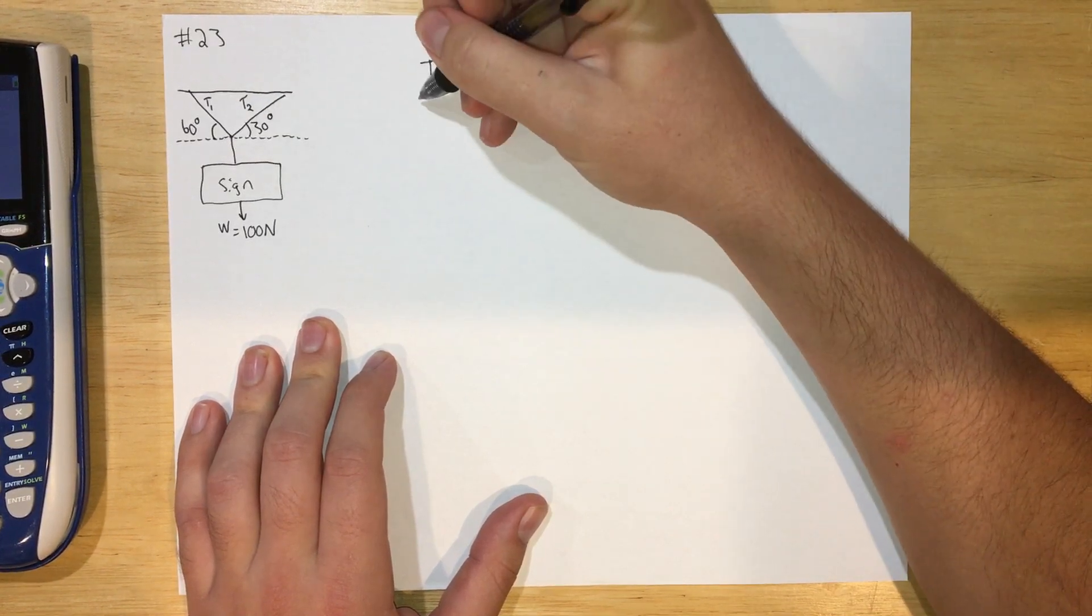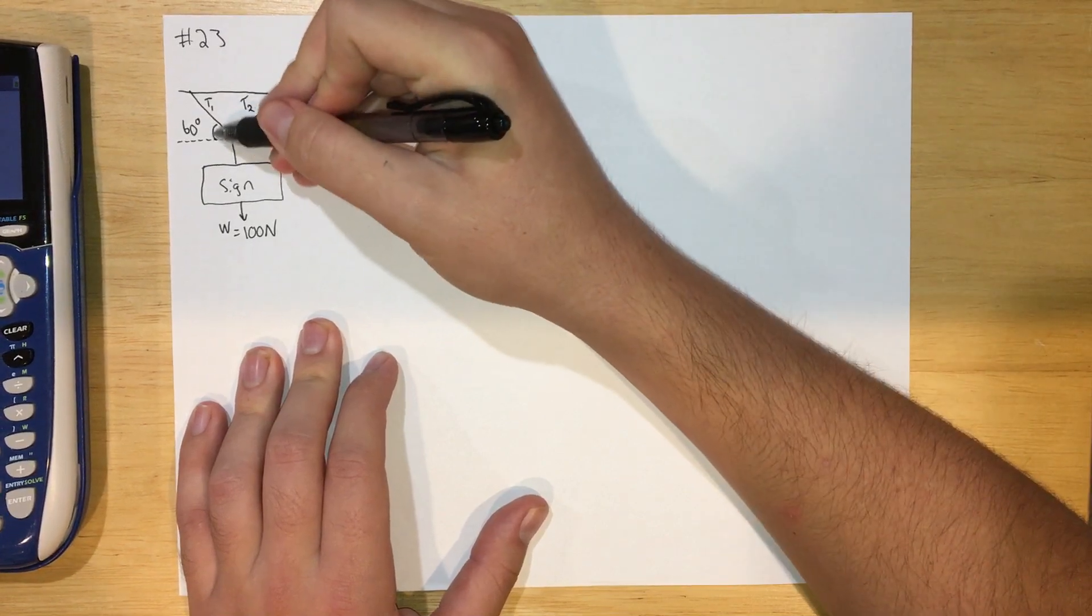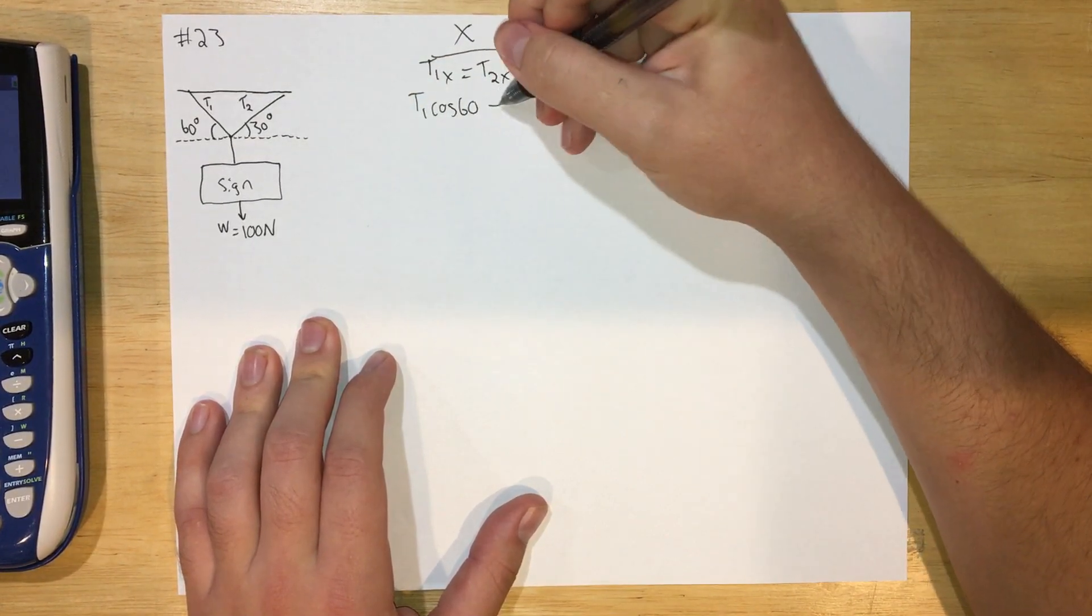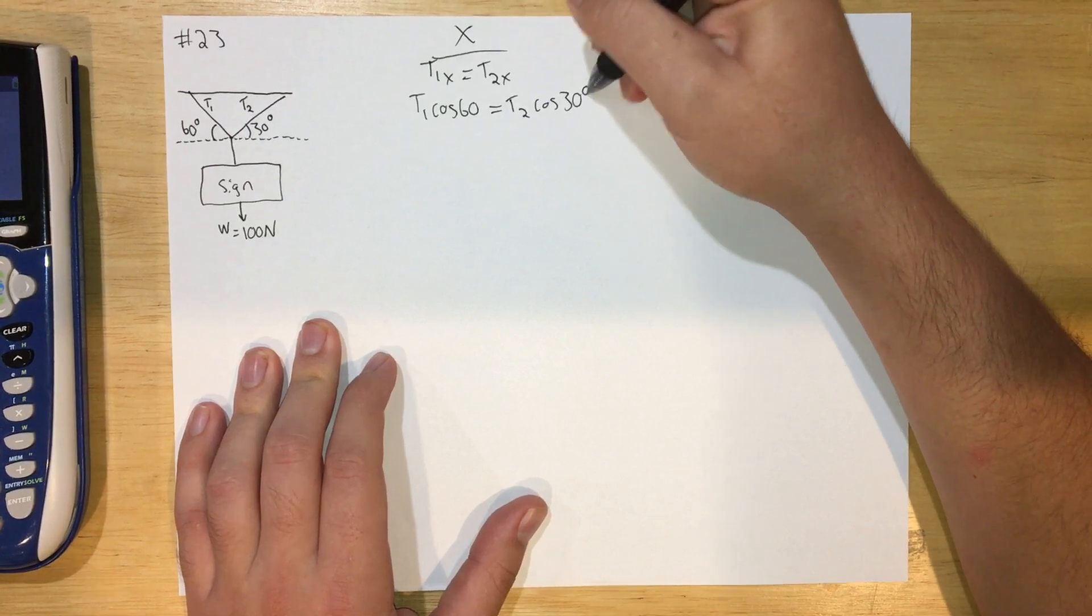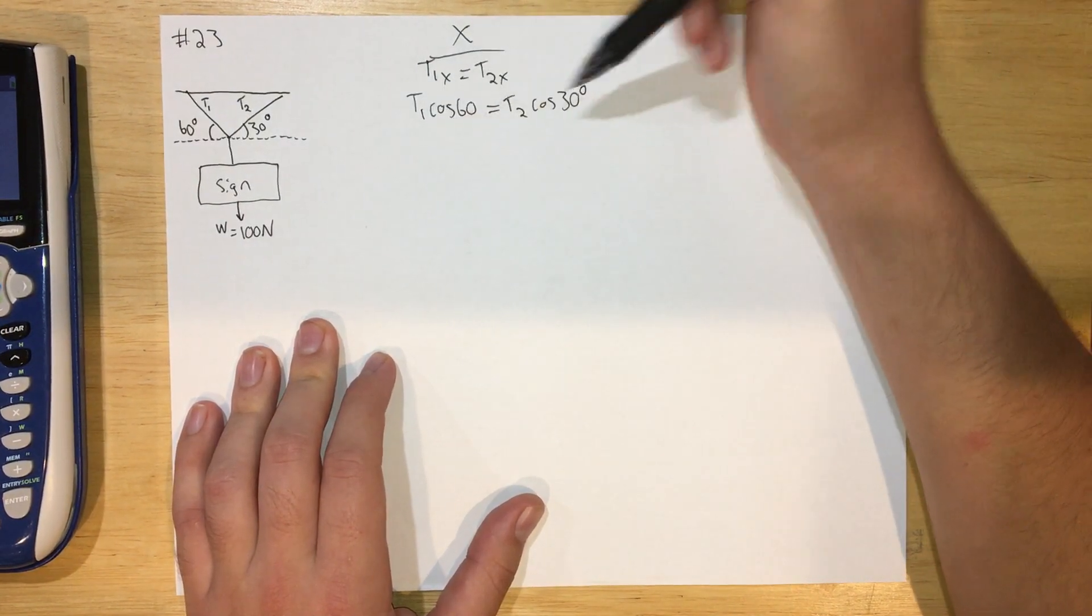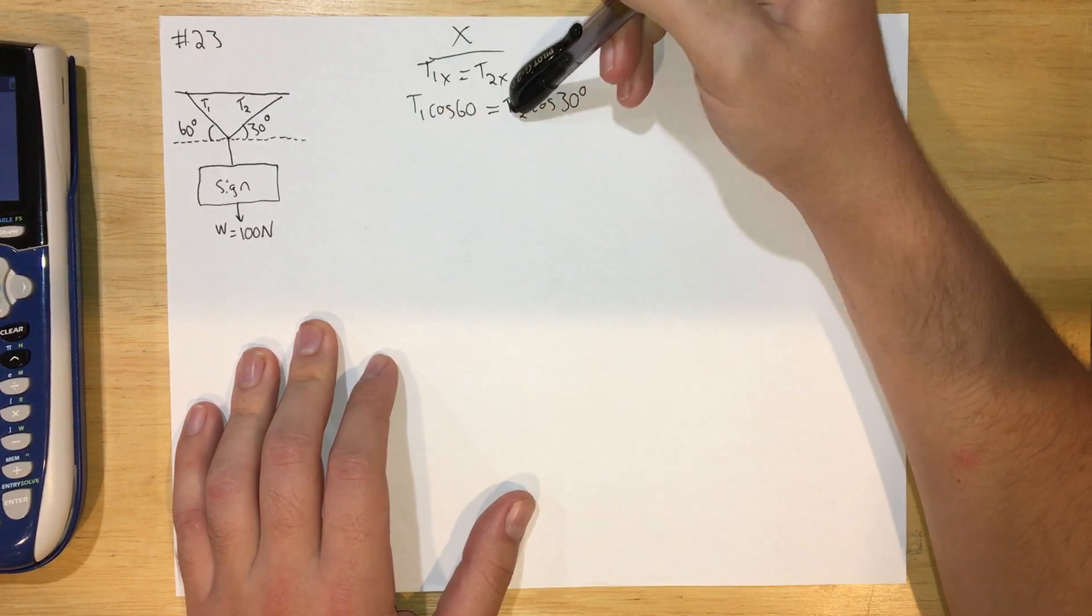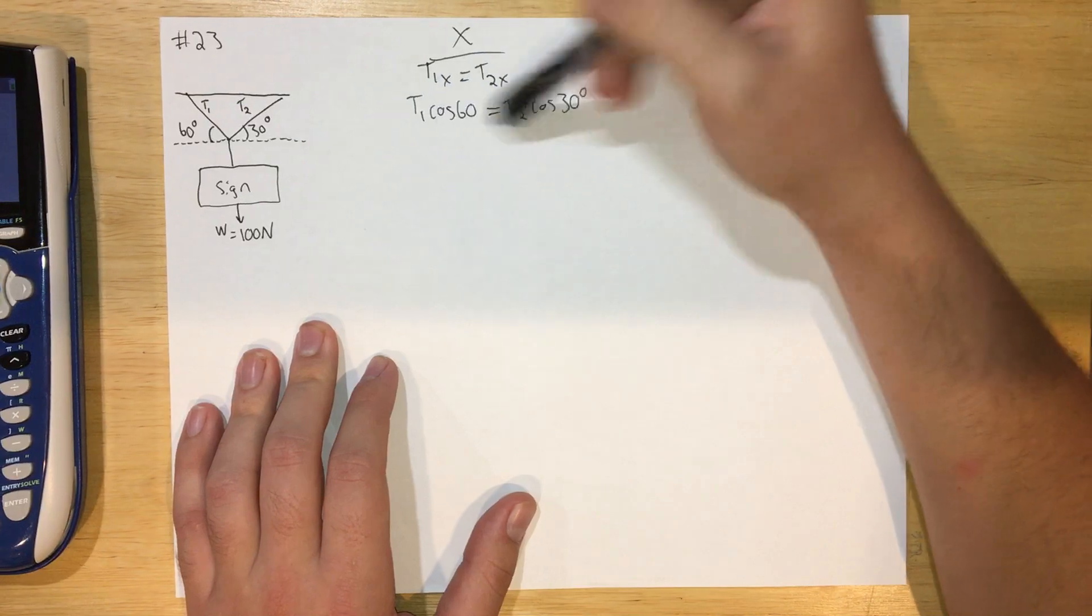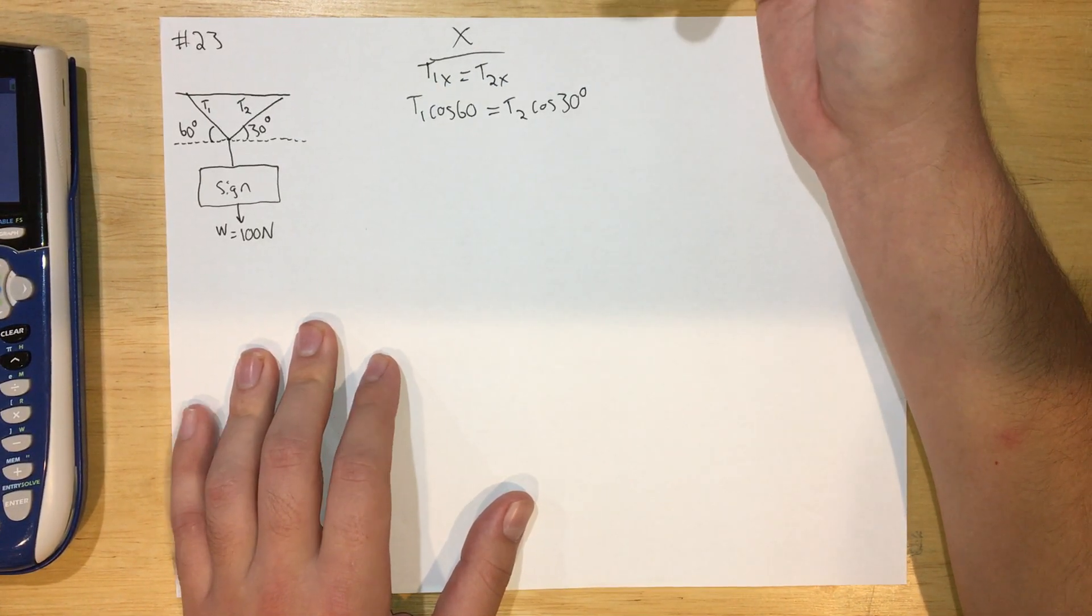I just wrote the angles in here so we don't have to get confused over using phi. So the X component of T1 is going to be T1 cosine 60 degrees, and this angle is given to you. And that equals T2 cosine 30 degrees. So if this was the only equation I had, I wouldn't be able to solve for the tension because there's two unknowns and only one equation. So knowing this, we're going to need at least one more equation to find the answer.